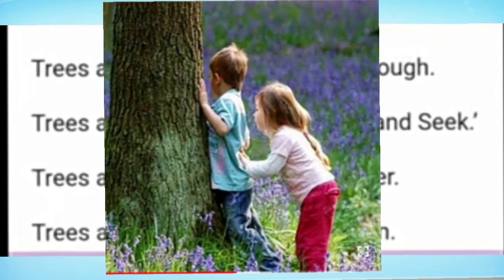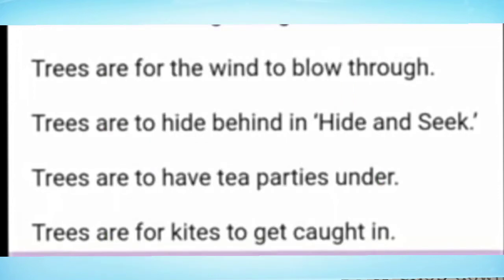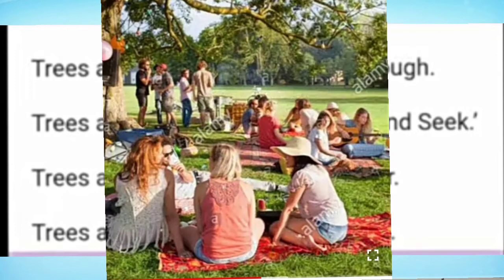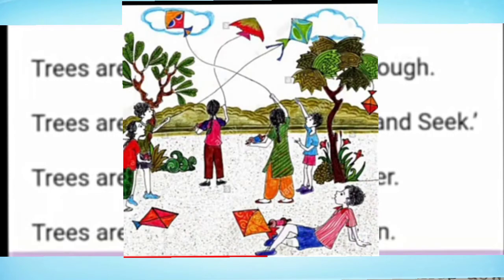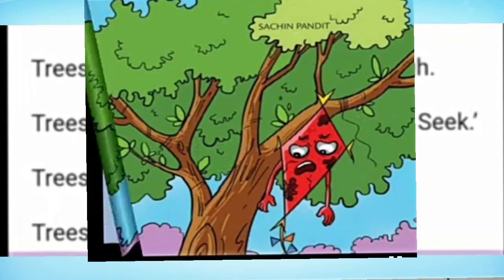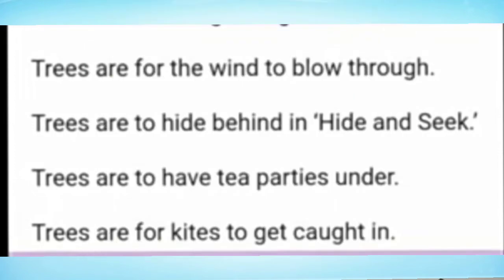Trees are to have tea parties under — so under the shade of trees we can conduct tea parties, gather together, and have fun. Trees are for kites to get caught in — when we fly kites, they can get stuck on the trees.